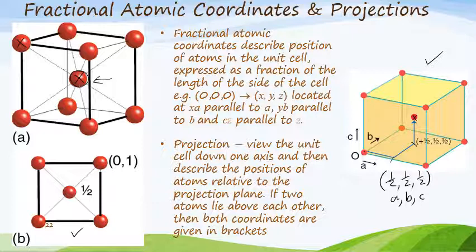Now let's look at the projection. We want to view the three-dimensional unit cell down one of the axes. If I put my eye along the direction of the arrow, I'm going to see atoms positioned on all four corners. This corner here corresponds to this one, this atom corresponds to this one, this atom corresponds to this one, and this one corresponds to this one over here.